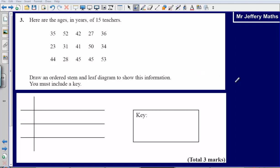This is question 3 from the 2008 non-calculator paper. Here are the ages in years of 15 teachers. We are given some numbers here. Draw an ordered stem and leaf diagram to show this information. You must include a key.